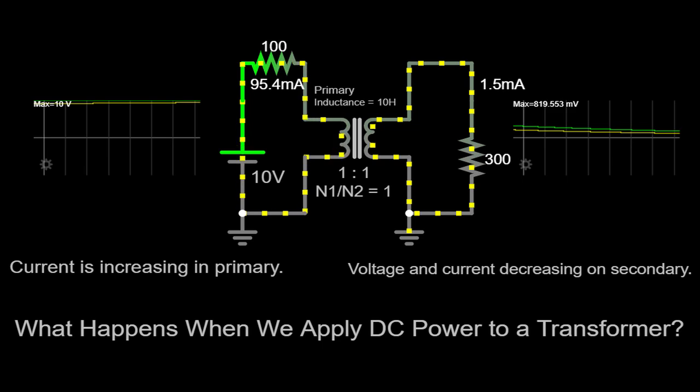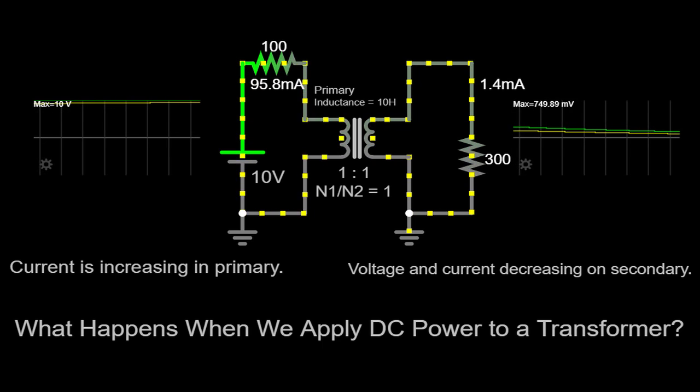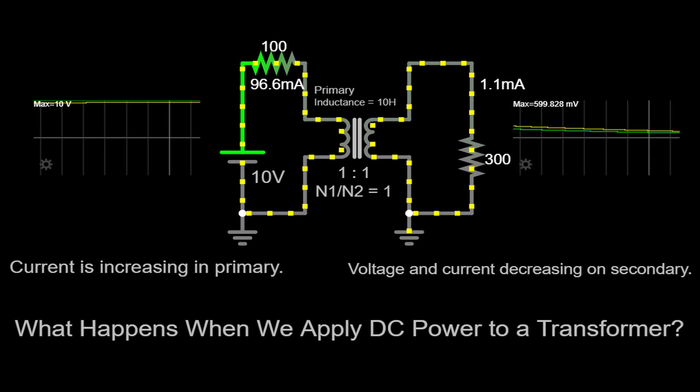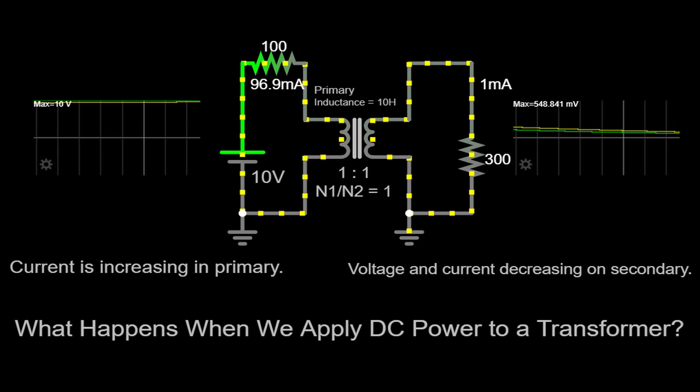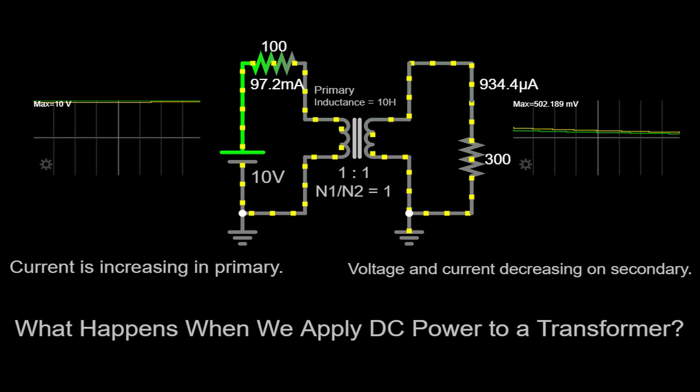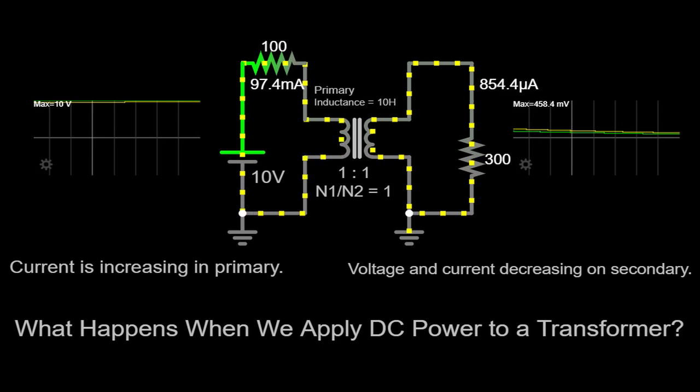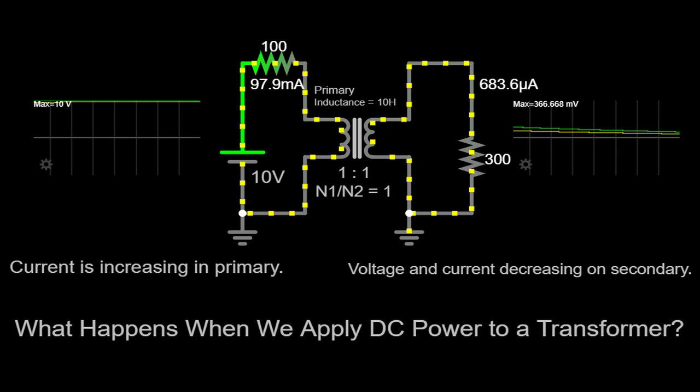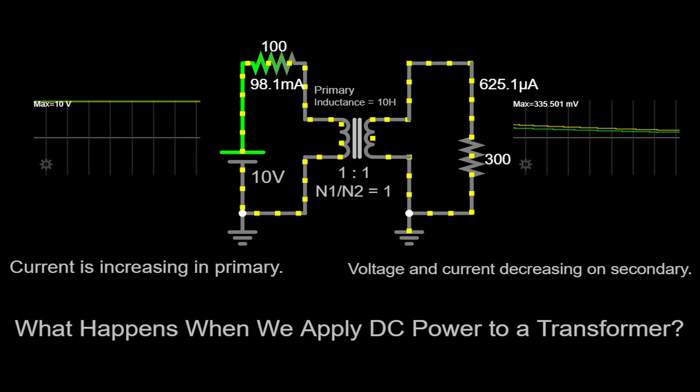Applying DC power to a transformer can have various consequences, depending on the design and specifications of the transformer. One notable consequence is the increased heat generation due to the magnetization current flowing continuously in the primary winding. This increased heat can be detrimental to the overall efficiency and lifespan of the transformer.